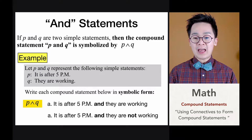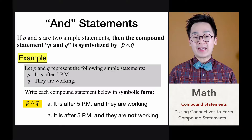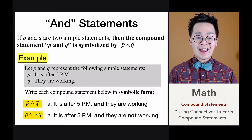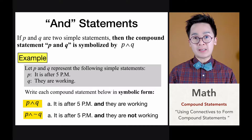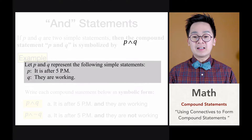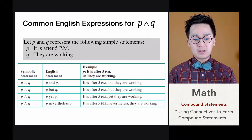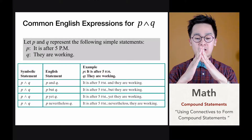For the second statement, we have 'it is after 5pm AND they are NOT working.' Notice that we have negated the second statement, 'they are working.' So when we change this into symbolic form, it becomes P ∧ ¬Q. Some other words that use the AND operation in symbolic logic include: but, yet, and nevertheless — these carry the same meaning as AND.